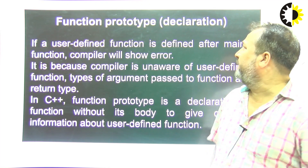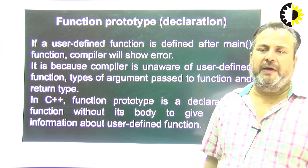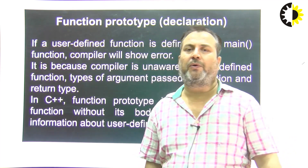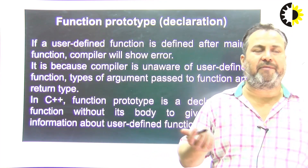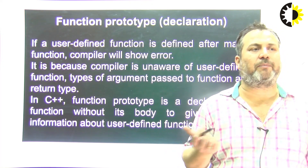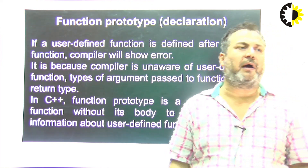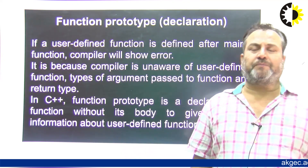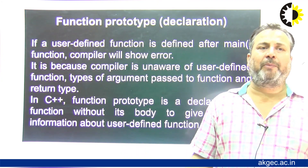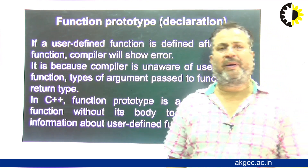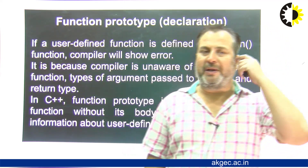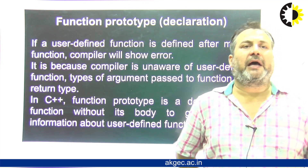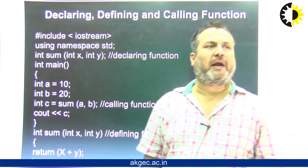Function prototype is nothing but its declaration syntax, where we would have to specifically mention the return type of the function, so that we could know what it is returning or not. If it is not returning anything, then we would have to specifically mention void, or it could be int, float, or character. Then the name of the function and the arguments: how many arguments, what type of arguments, or if it is not passing any argument.